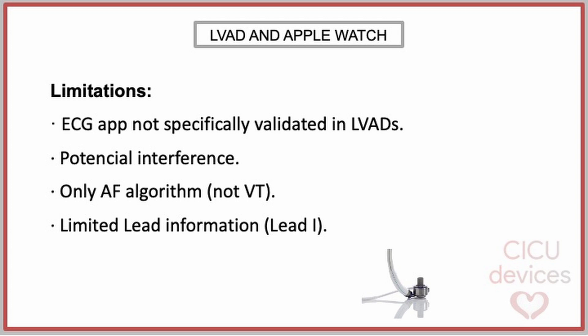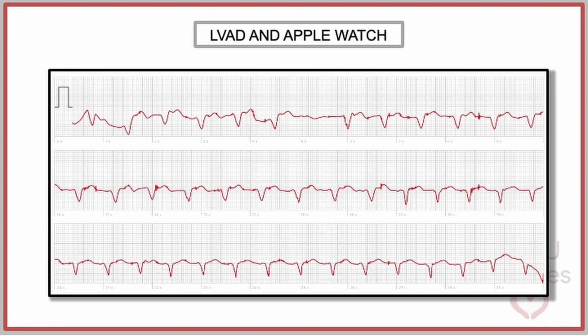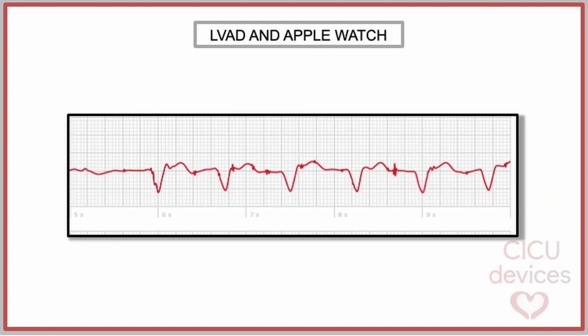Currently, there is limited experience in using Apple Watch in patients with LVAD. We present an example where we can observe an ECG tracing performed on a patient with an LVAD using the Apple Watch. An irregular rhythm can be detected, corresponding to atrial fibrillation, with a wide QRS at a rate of 80 beats per minute. If we analyze it more closely, we can detect small artifacts without a defined pattern, caused by LVAD interferences.